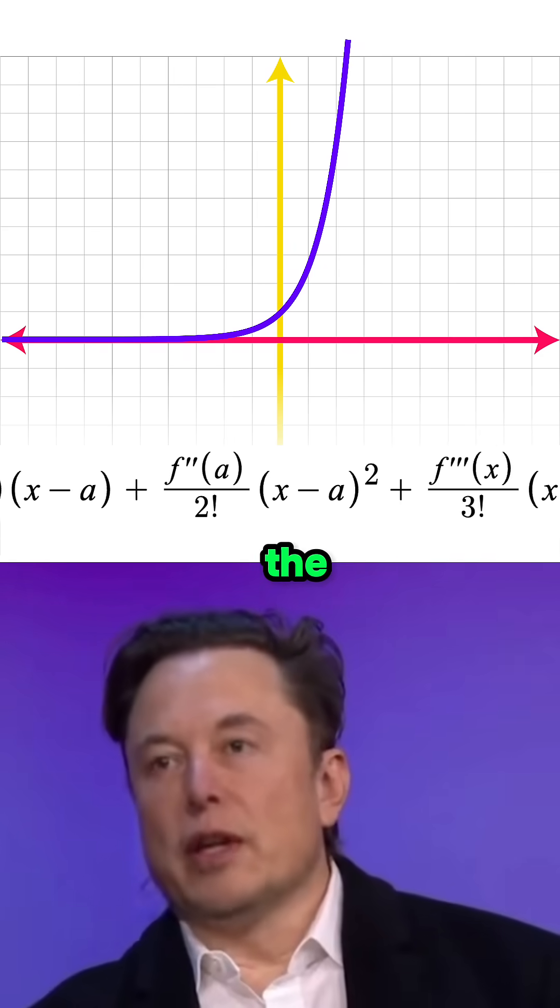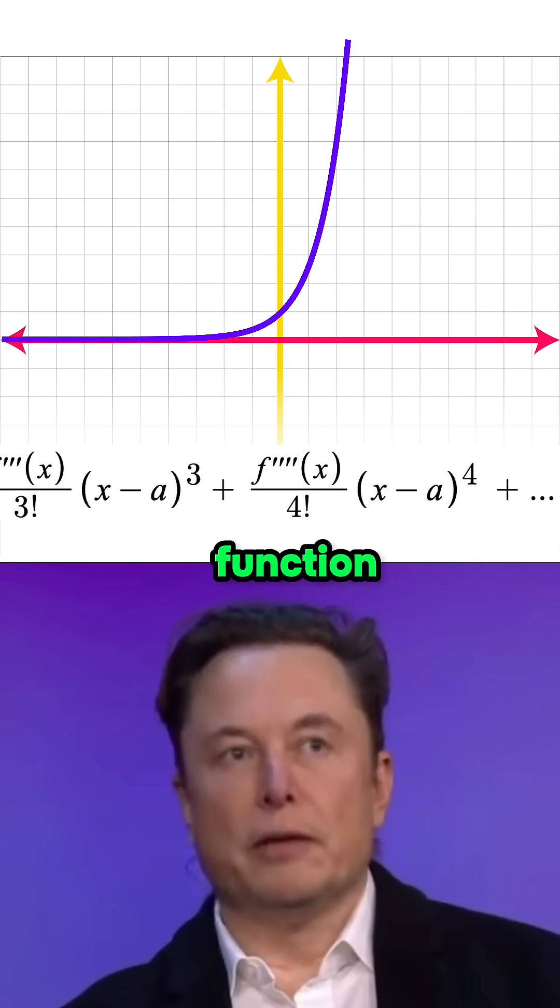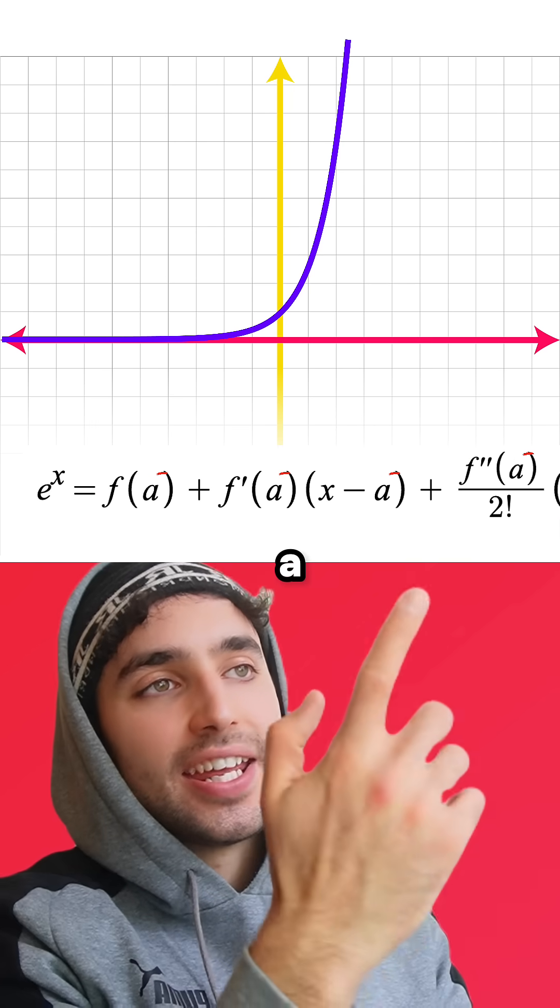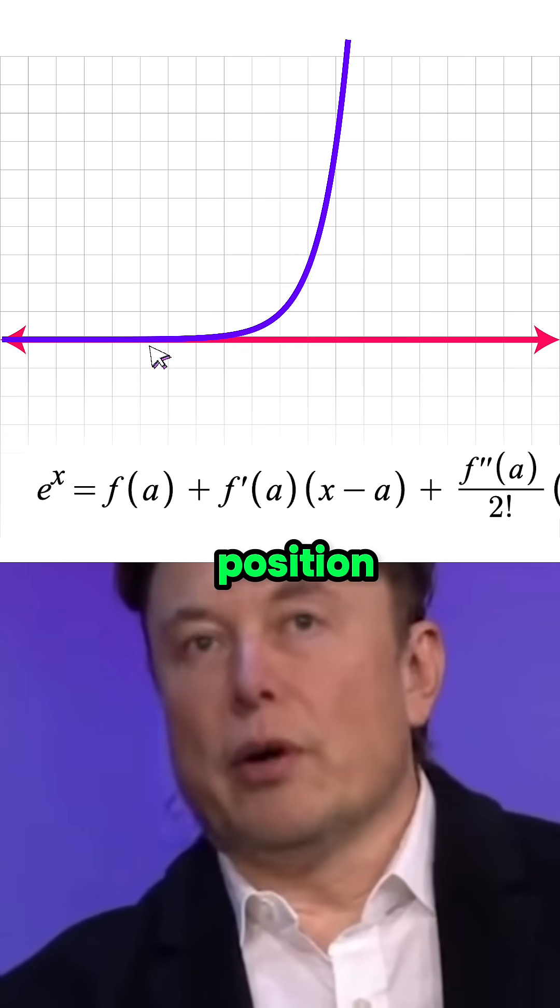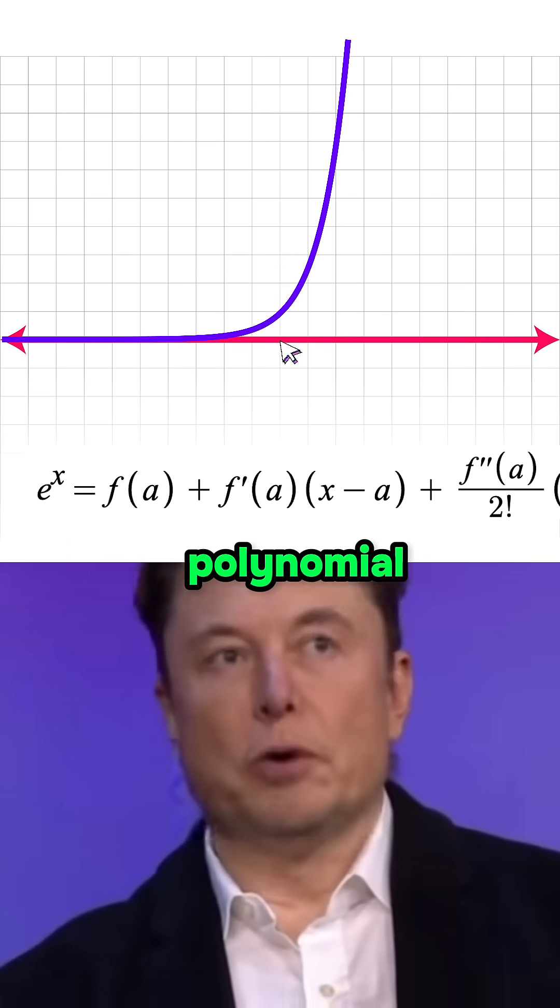So this here is the formula for the Taylor series. And to rebuild our function, we just gotta find each of these terms. Wait, what does that letter a mean? It's basically whichever position along the x-axis we build the polynomial around.